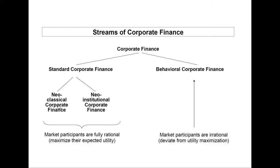Another assumption within the assumption of a perfect capital market is that there are no taxes. The final assumption is that everybody has the same information, so there is full transparency on the capital market. This is called the homogeneous information assumption. The neoclassical models argue based on supply, demand and market price. Due to the simplicity of the models, you can get very clear and often intuitive results. Therefore, the neoclassical stream of corporate finance is very powerful.